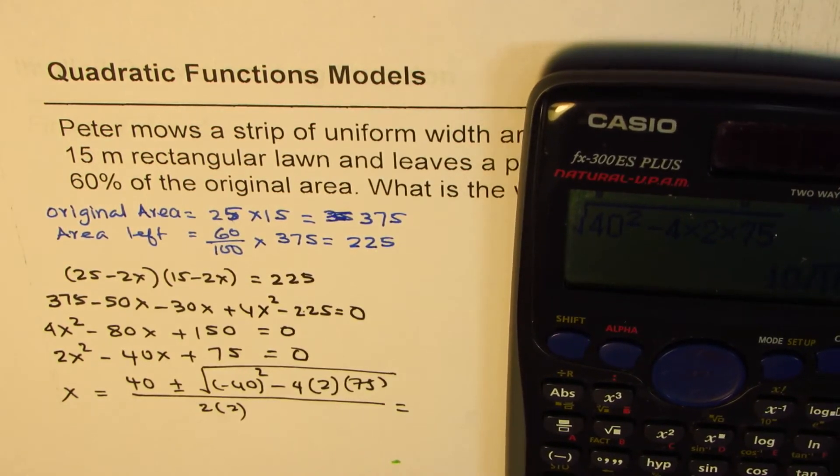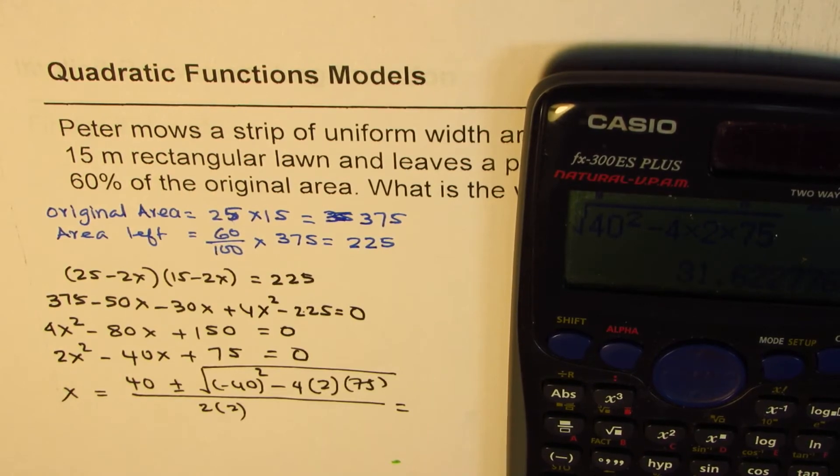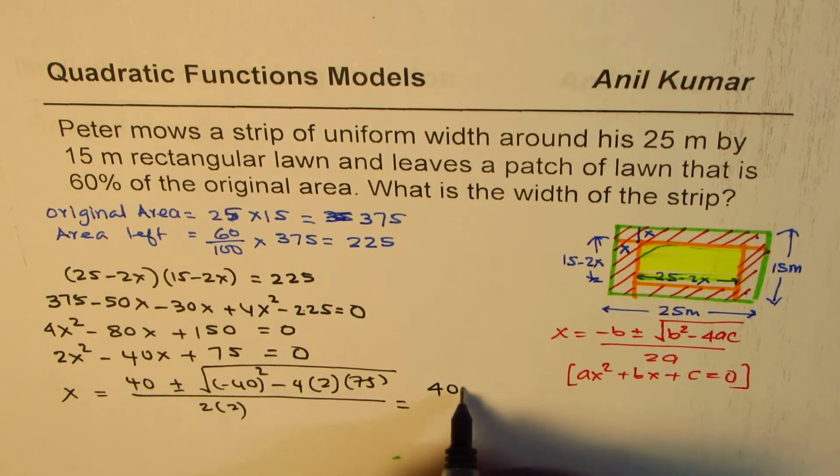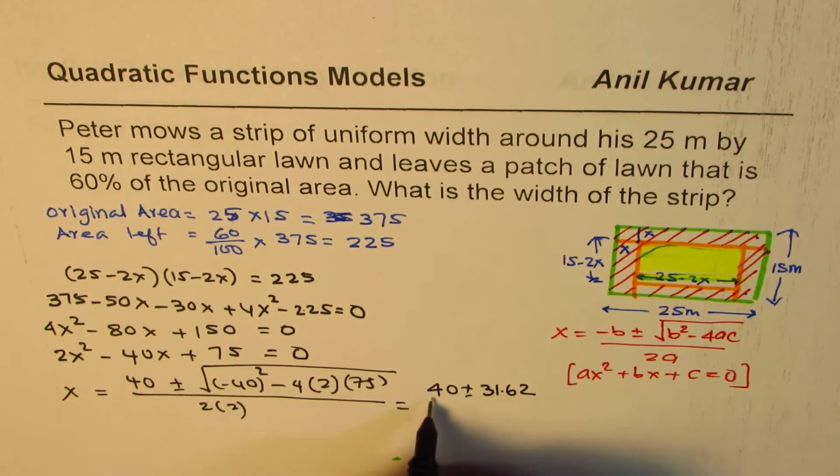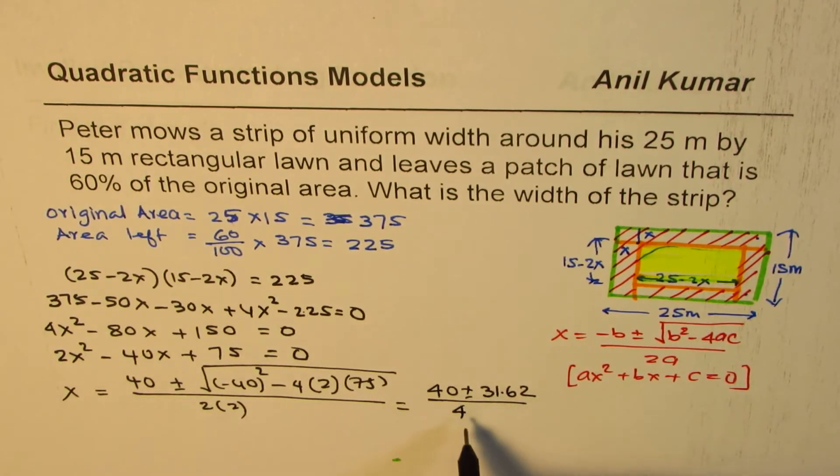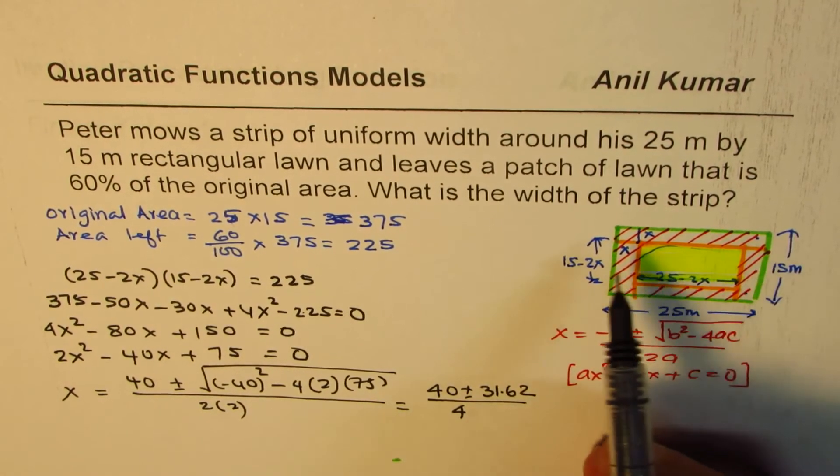Let me write the decimal equivalent of this: 31.62. So what we have here is 40 plus or minus 31.62 divided by 4. That gives you two possible solutions. You should realize that since the width is 15 meters, x has certain restrictions.